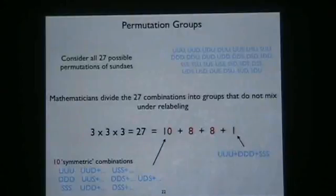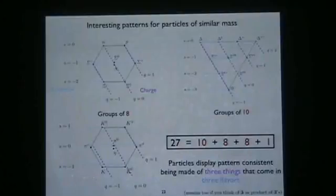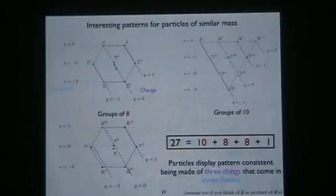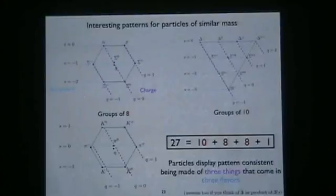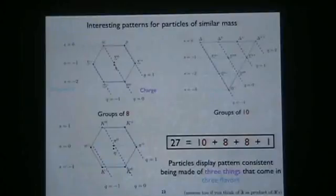In the particle zoo we didn't see sixes and threes — we saw tens, eights, and ones. If we invite a third person along, choosing three sundaes from three flavors gives 27 combinations (3×3×3). And if you do the same exercise for three objects from three flavors, 6 + 3 is replaced by 10 + 8 + 8 + 1. The ten symmetric combinations, two groups of eight, and one antisymmetric combination. So mathematicians look at this grouping and say: all these particles, if they group naturally in tens, eights, and one, are displaying a pattern consistent with each one being made of three things that come in three flavors.